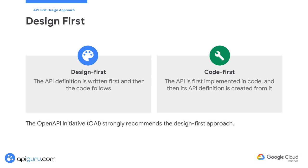The OpenAPI initiative strongly recommends the design-first approach. This is because the scope of APIs described in API definitions is limited, and coding-first can lead to discrepancies between the API and its API definition. If the API is developed without considering the limitation of the API definition, you might need to alter the code later to fit the definition, which can be problematic. Using design-first ensures that the API and its API definition are aligned.